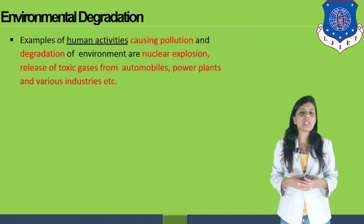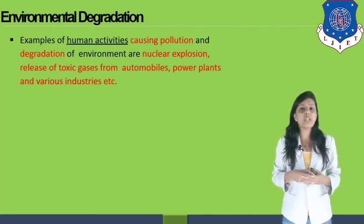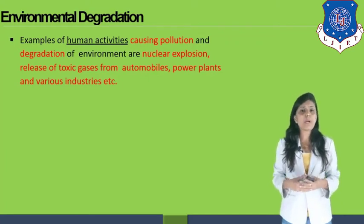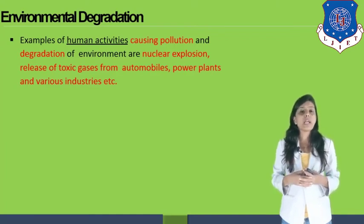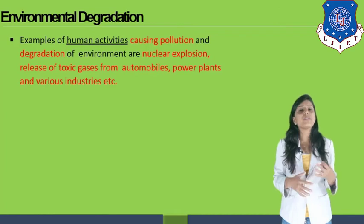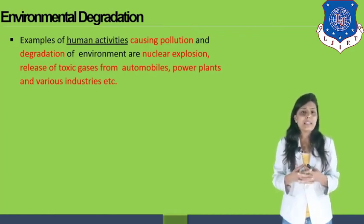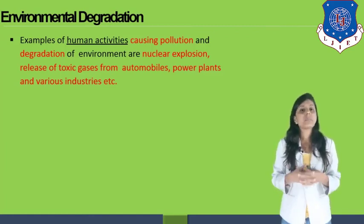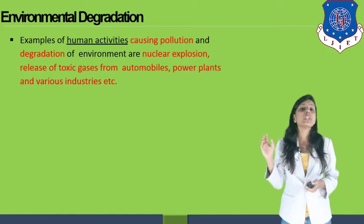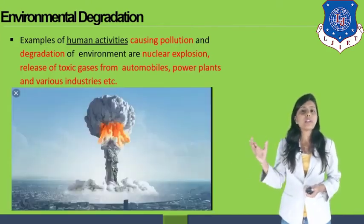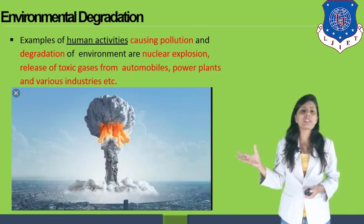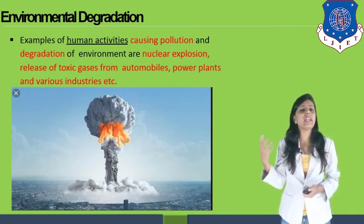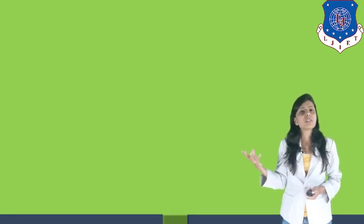Examples of human activities causing pollution and degradation of environment include nuclear explosions, release of toxic gases from automobiles, power plants, and various industries. Automobile industries are finding substitutes to replace petrol — such as water-based fuel or electric cars — to reduce pollution. This is the industry harming the air quality index to the maximum. You can see in the figure how different automobile sectors, power plants, and other industries are affecting water, air, and everything surrounding us, including living organisms.